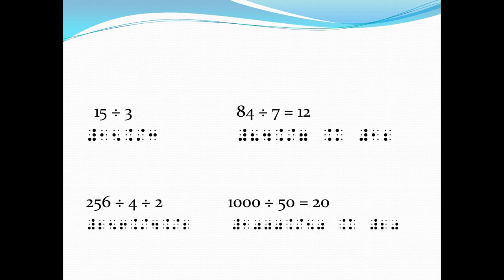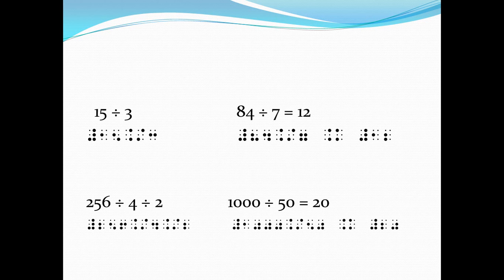For our examples using the division sign, the first expression is 15 divided by 3. We write it in Nemeth with the numeric indicator, digits 1 and 5 for 15, then the divided by sign — a two-cell character with dot 4 and 6 on the first cell and dots 3 and 4 on the second cell. There should be no space before or after the divided by sign. Then we write number 3 without a numeric indicator.